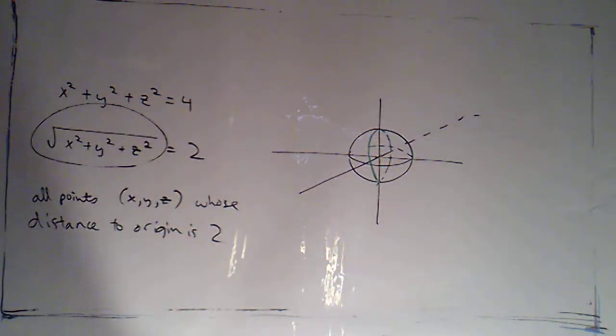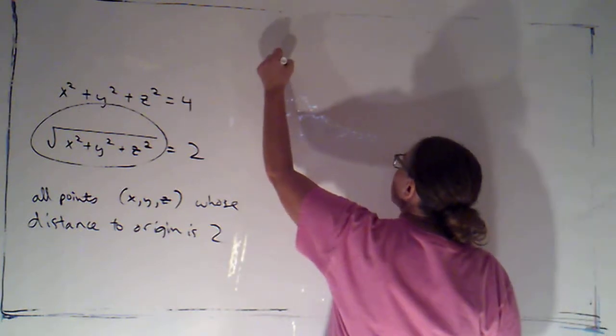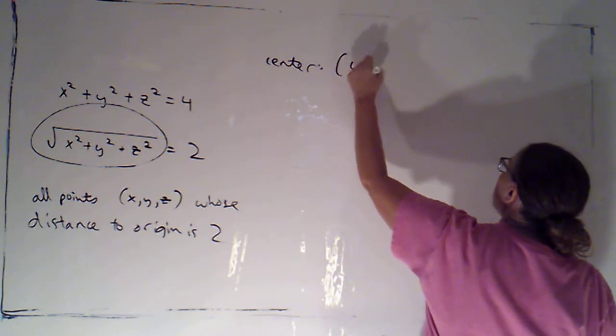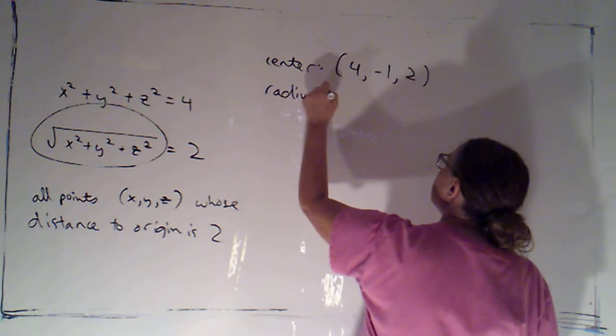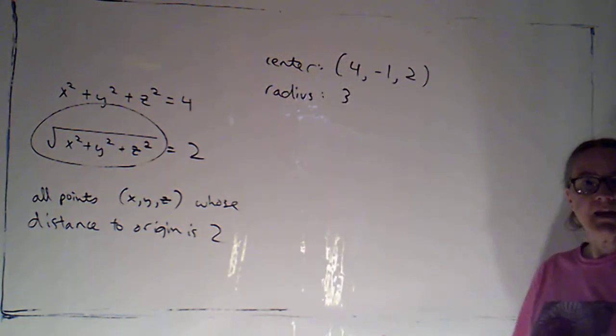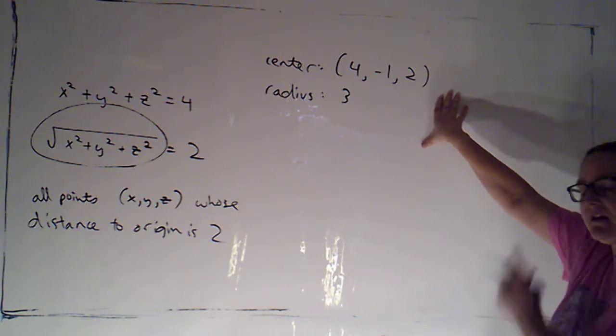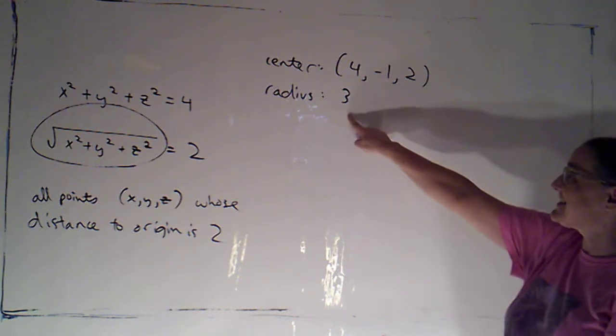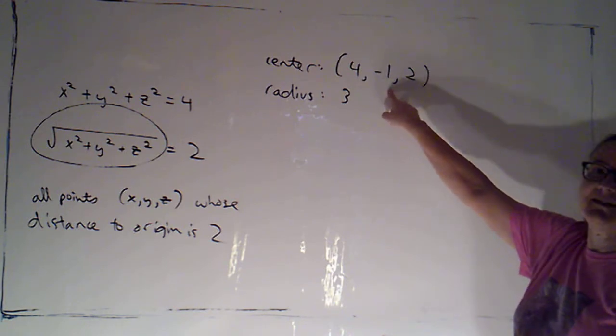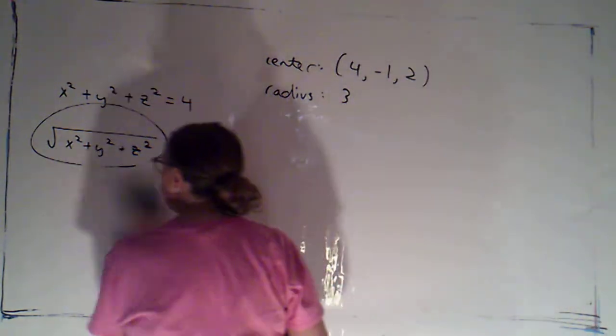So what I'd like to do is, let's take a circle. Let's let the center be the point (4, -1, 2). Let's let the radius be 3. Let's try and come up with an equation for that sphere, and then try and graph it. See if you can figure that out. Again, basically this is going to be the set of all points whose distance to this point is equal to 3. So, pause the video, see if you can figure that out.